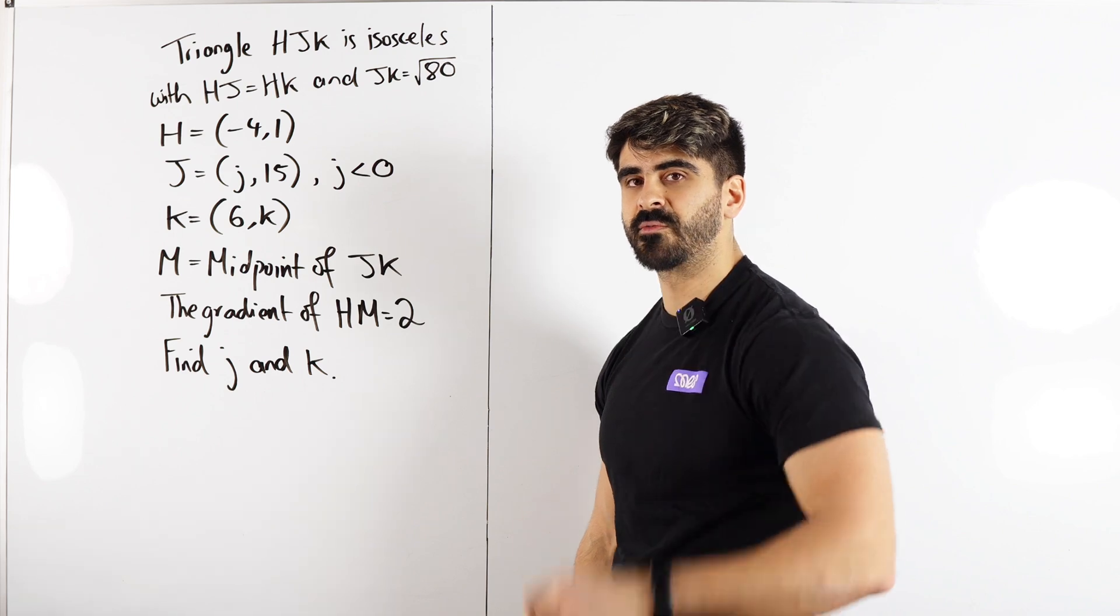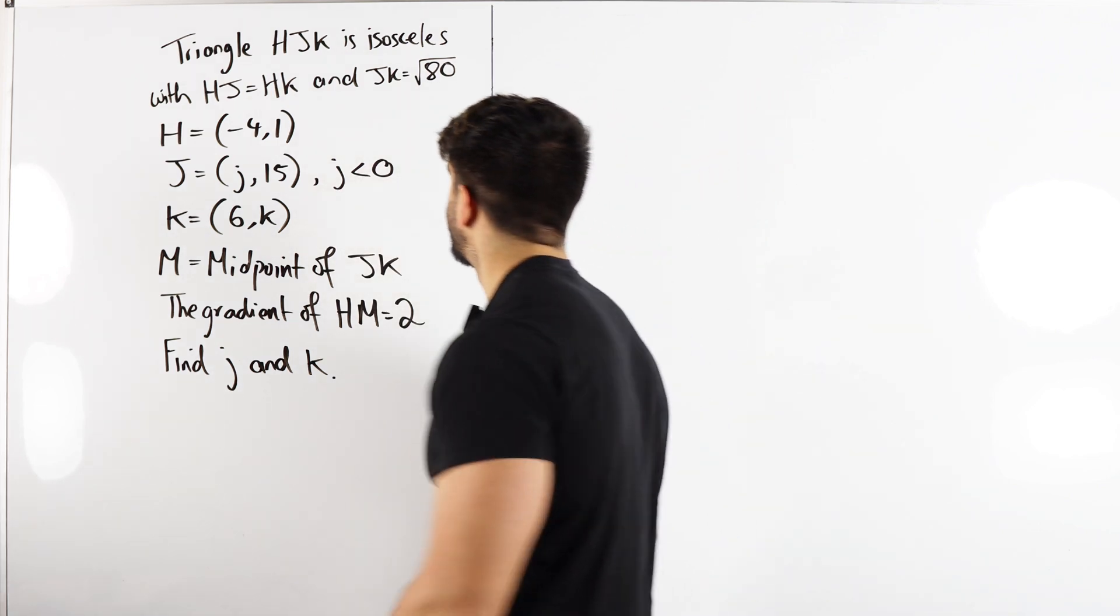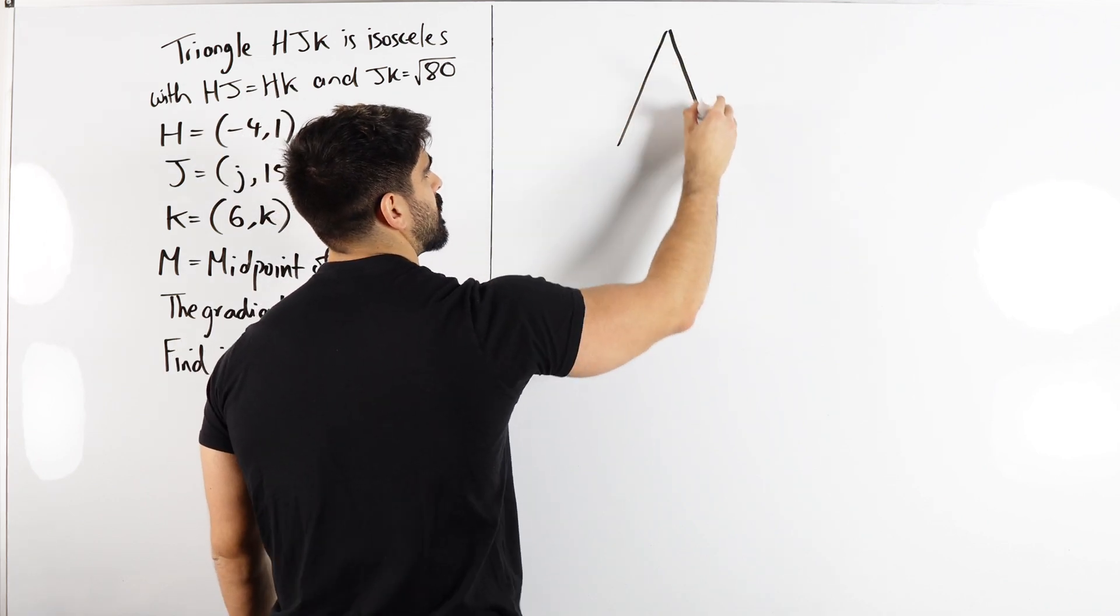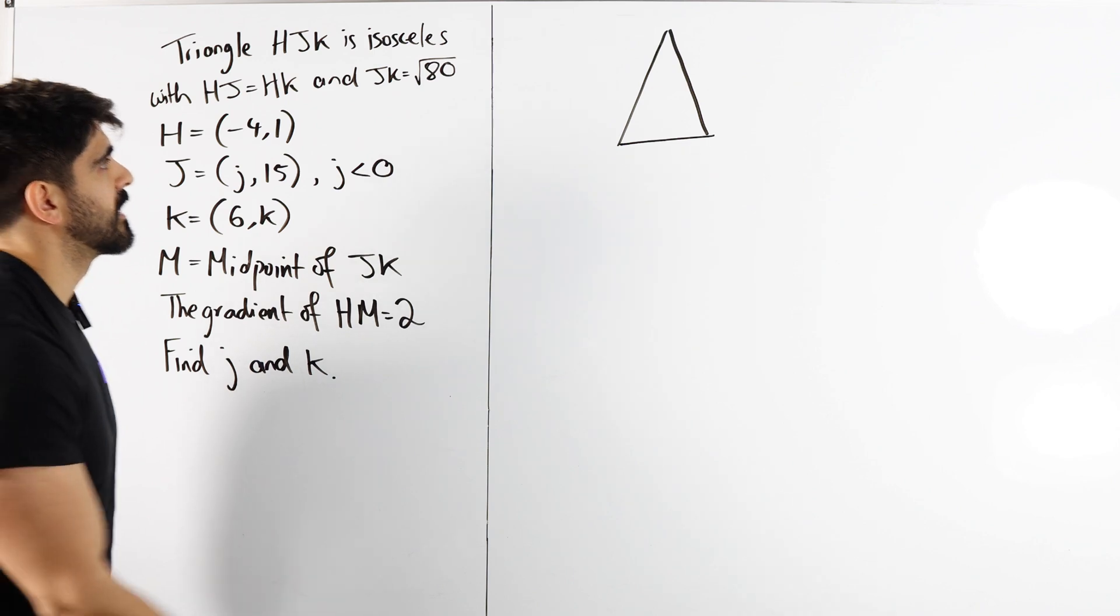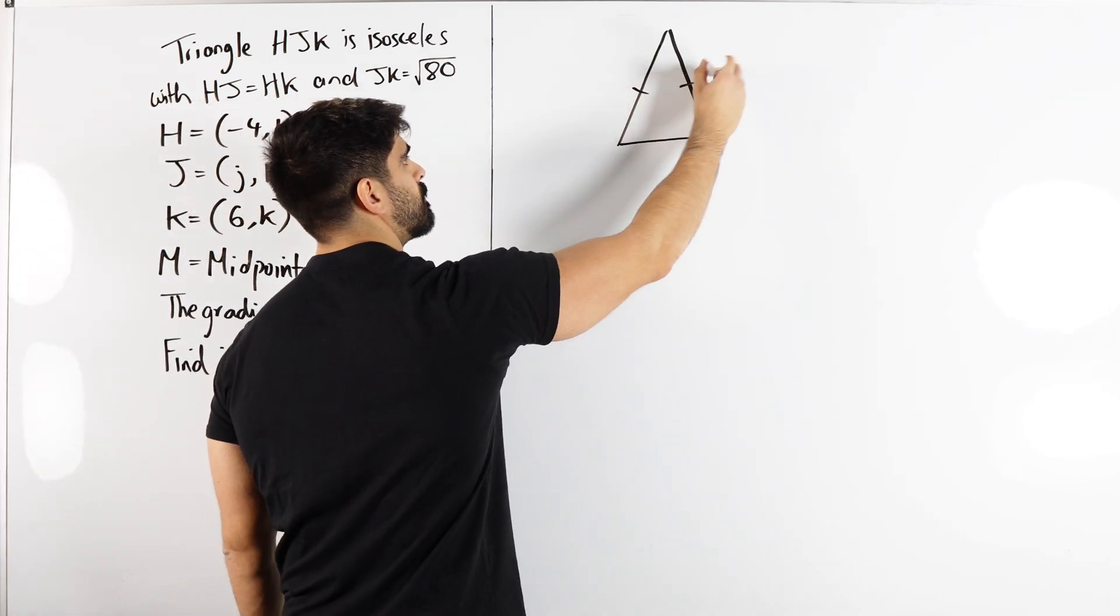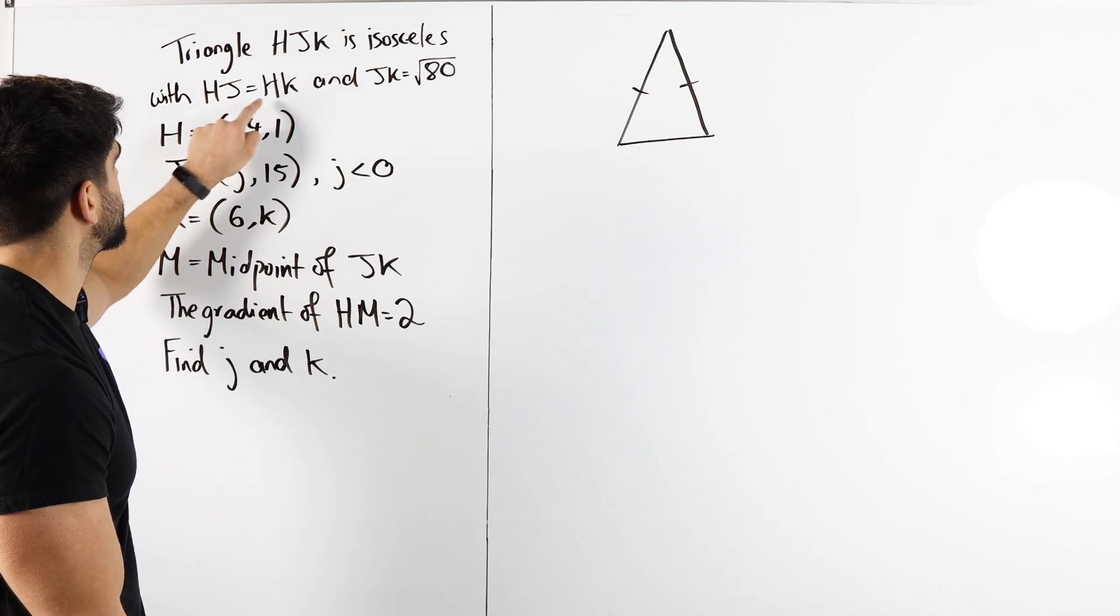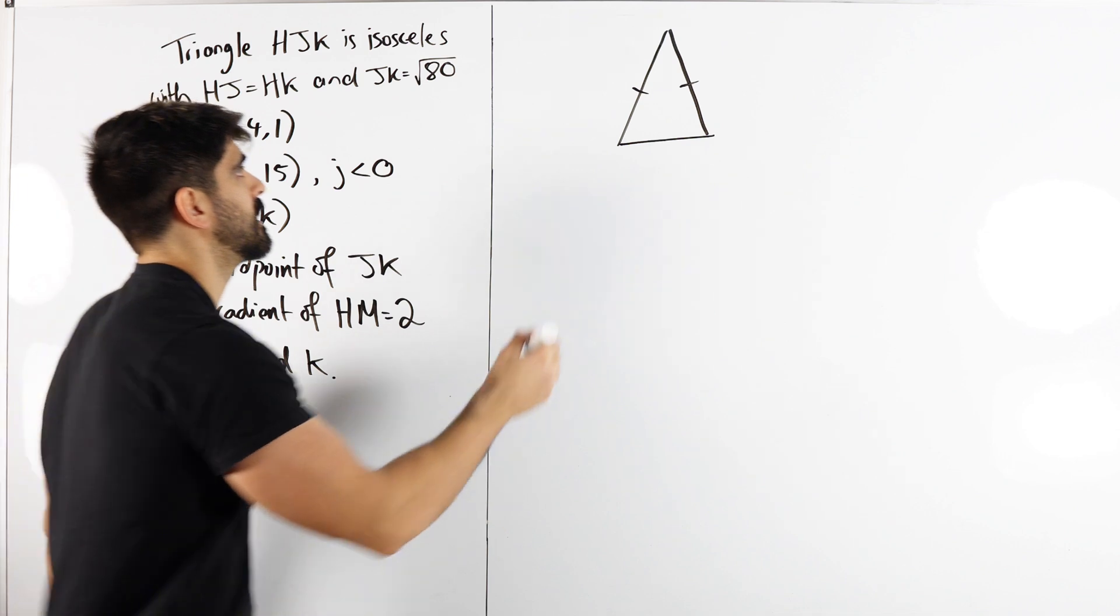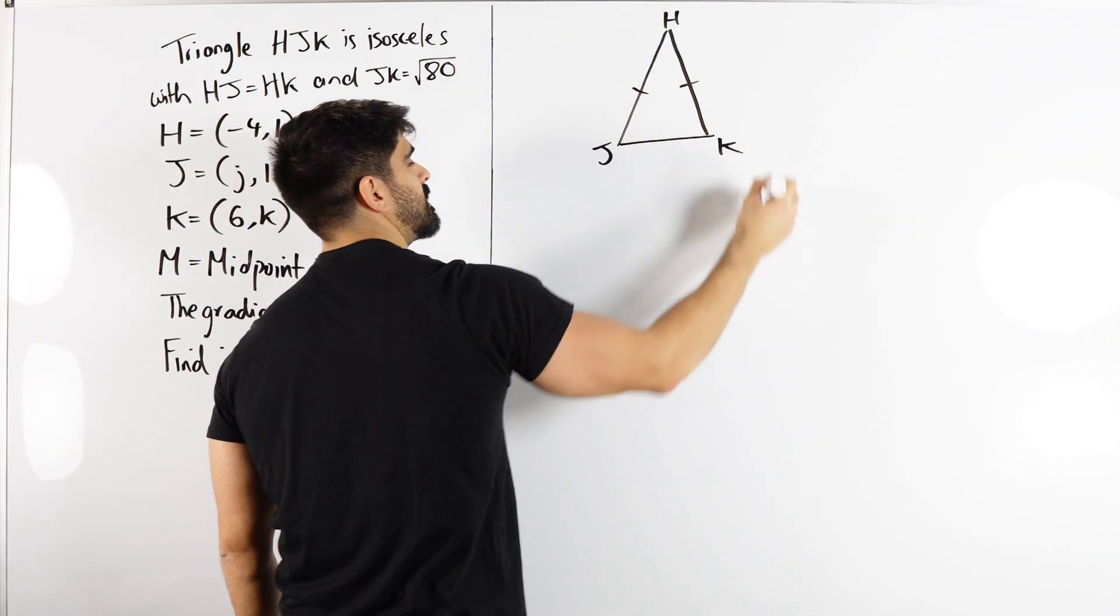Like I said, the red flag here is they've not drawn a picture for you. So let's just draw a generic picture of our isosceles triangle. We have these two sides being equal, HJ equals HK. The common is H, J and K.